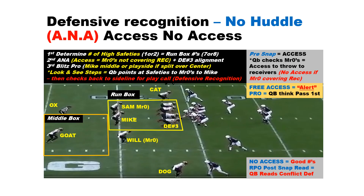We want to take advantage of defensive recognition every play with our no-huddle system. We use a process called ANA — access, no access. The quarterback will point at the safeties; in this case we have two high, which determines the maximum number they can have in the run box. Second, we come down to those hanging outside backers, which we call Mr. Zeros — in this case the Will and the Sam. We check to see if our receivers have access to throw the football, meaning those Mr. Zeros are not covering them. If they are outside covering the receivers, we say we have no access, which tells us we have good numbers in the run box, and with our RPO we'll read them as the conflict defender.